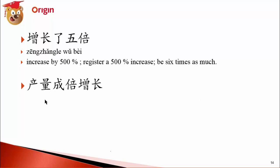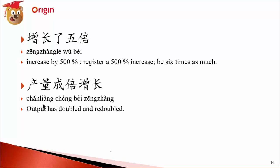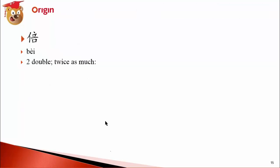产量 (chǎnliàng) means productivity or output. So 产量成倍增长 means the output has doubled and redoubled — 成倍 meaning doubled.